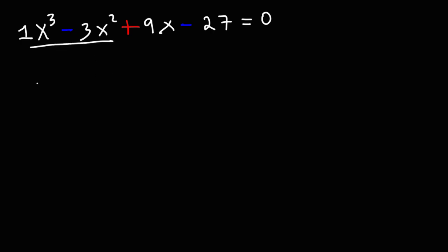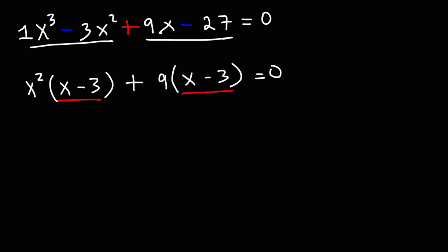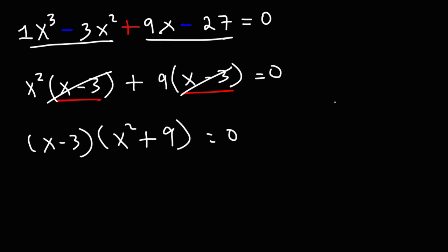Let's take out the GCF in the first two terms. The greatest common factor is x squared. x cubed divided by x squared is x, and negative 3x squared divided by x squared is negative 3. For the last two terms, the GCF is 9: 9x divided by 9 is x, and negative 27 divided by 9 is negative 3. Note that we have the same common factor (x minus 3) in both groups — that means we're on the right track. Factoring out (x minus 3), we're left with x squared from the first group and plus 9 from the second group.